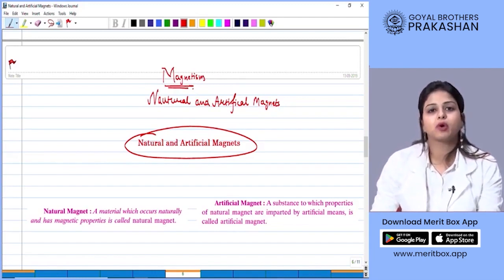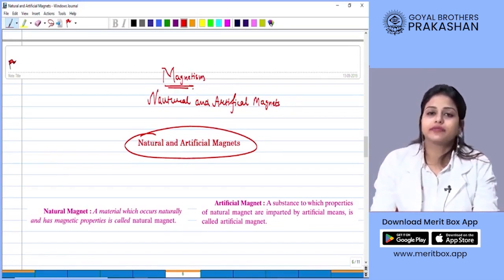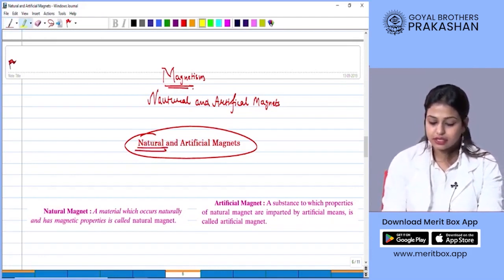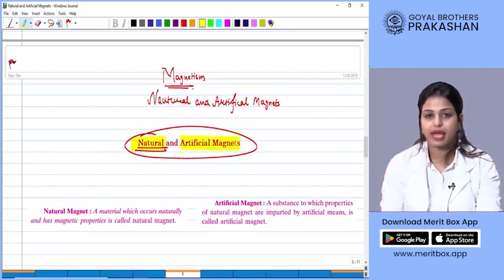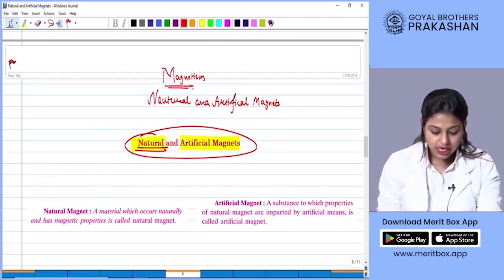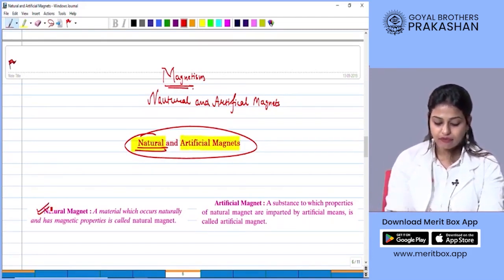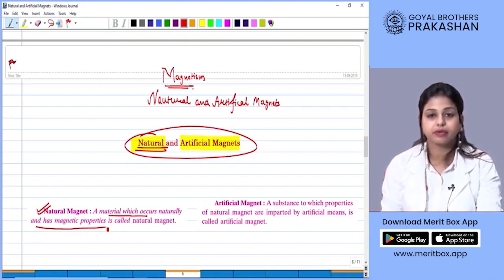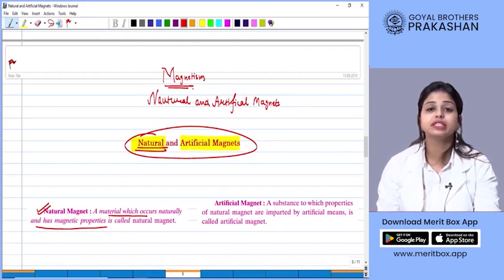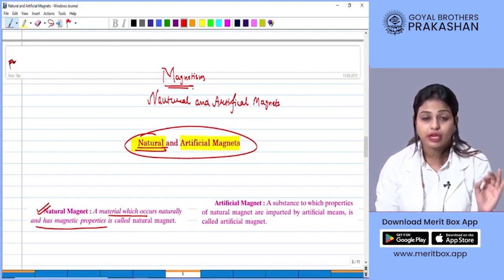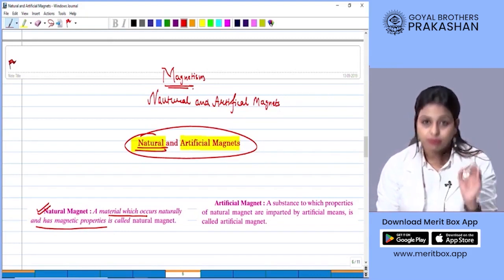When we talk about magnets, they are classified into two categories. One is the natural magnet and the other is artificial magnets. Now let's begin with defining them one by one. Natural magnets are defined as a material which occurs naturally and has magnetic properties. That means the material has magnetic properties on its own, it is not created by humans.